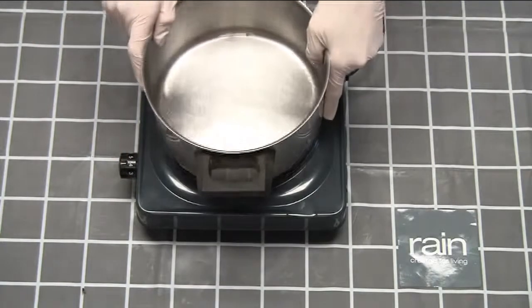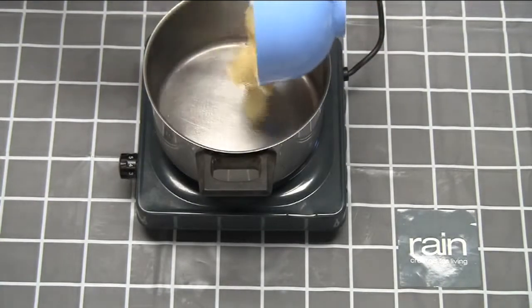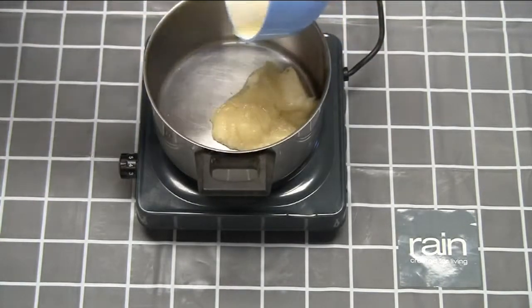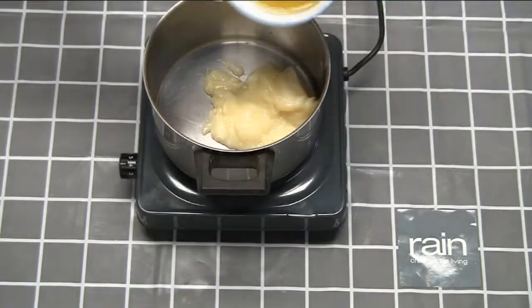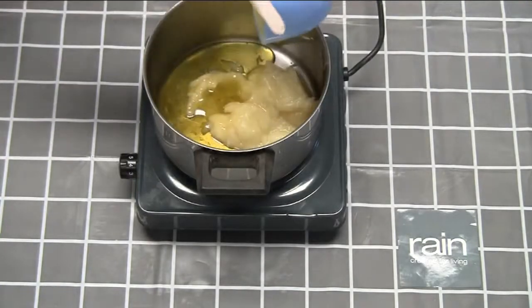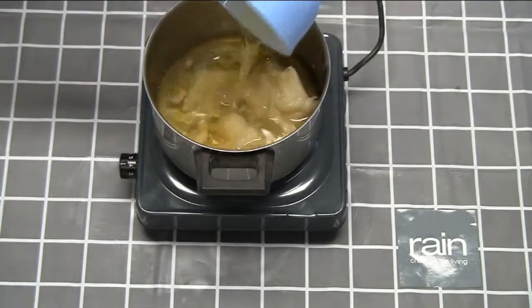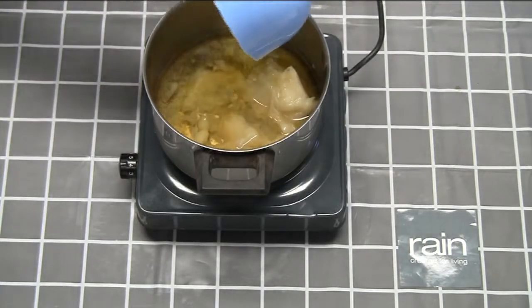You can make one yourself by using old cereal boxes and or the polystyrene bases that come under your fruit and vegetables, the trays. You can cut those to size and put them into your mold to create divisions.